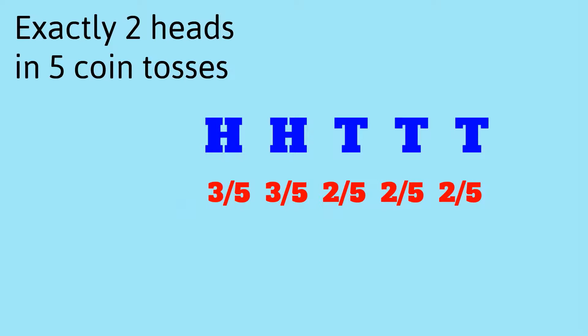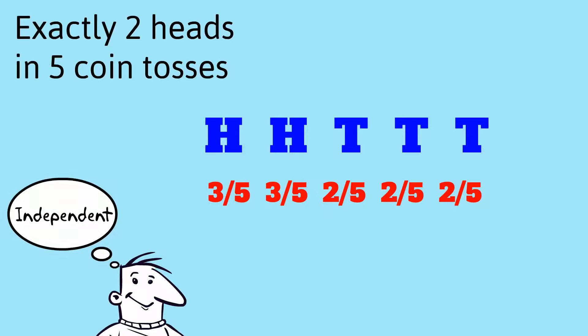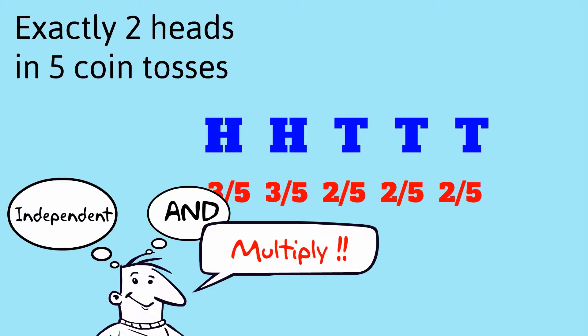Now these coin tosses are independent. What happens on one coin toss has no effect on what happens on any of the other coin tosses. And the second thing is that if you express the probability, you use the word AND a lot. So we're looking at the probability of getting a head, and then a head, and then a tail, and then a tail, and then a tail. So these two ideas of independence and this word AND, mean that we should multiply these probabilities together.